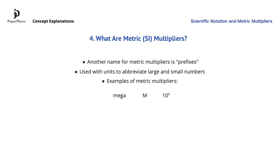MEGA, denoted with capital M, stands for 10 to the power of 6. An everyday use of this is in megabytes, which basically means 10 to the power of 6, or 1 million bytes. Kilo, abbreviated with the letter K, stands for 10 to the power of 3, and can be seen in kilogram. Centi, abbreviated with lowercase c, stands for 10 to the power of negative 2, and is found in centimeters. And milli, lowercase m, is 10 to the power of negative 3, and can be seen in millimeters or milliliters.